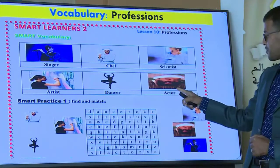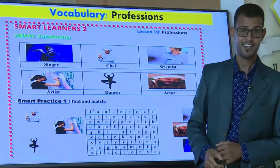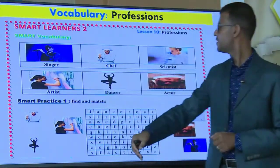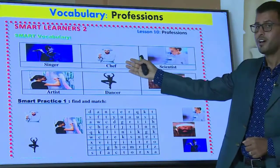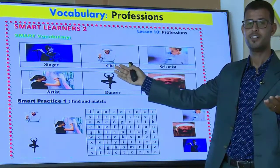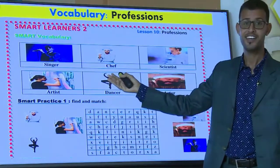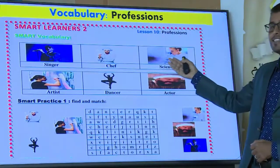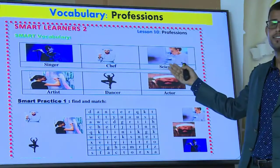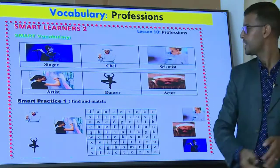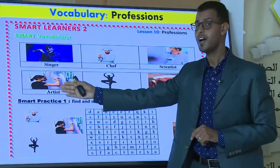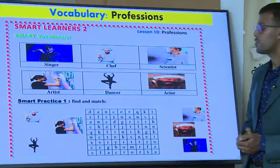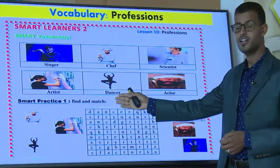Do you know this person? This is a Moroccan actor. Can you give me the name of a chef? Chef Moha is a chef — excellent job. A scientist is a person who works in a laboratory. An artist is someone who paints or draws.